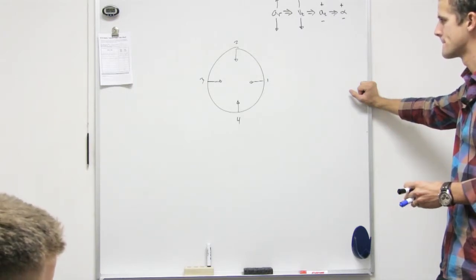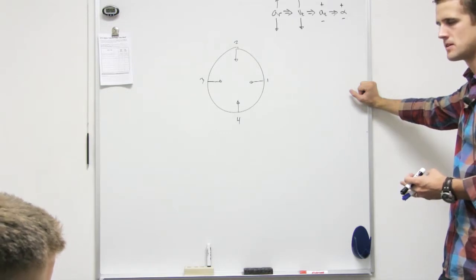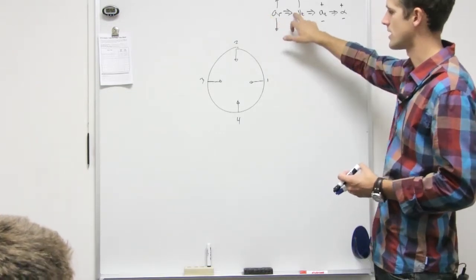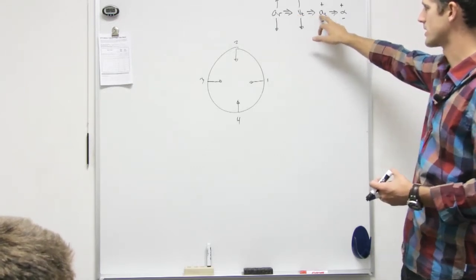Will this be zero? Yeah. Because they're all the same? Yeah, so our radial acceleration doesn't change, which means our velocity doesn't change, which means our accelerations are zero.